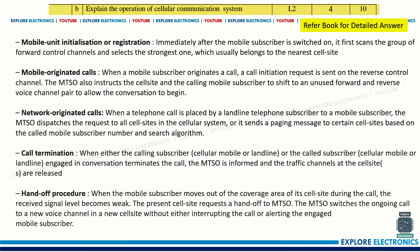Explain the operation of a cellular communication system. Cellular communication happens in different steps: mobile unit initialization or registration, mobile originated calls or network originated calls, call termination, and the handoff procedure. These are the different operations of a cellular communication system — you need to explain what actually happens in each process.